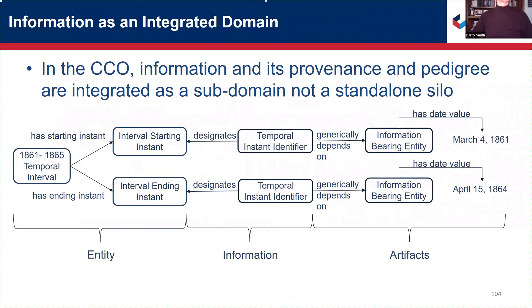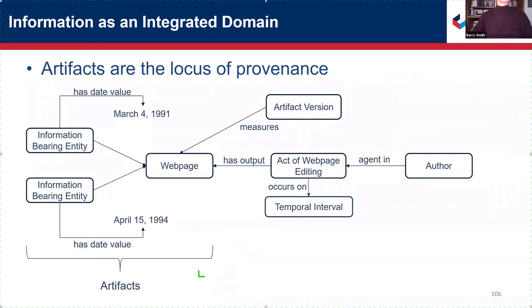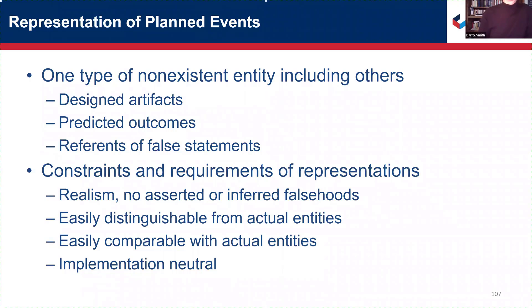We won't talk about literals, the way CCO deals with provenance, or the ways provenance is recorded, because we want to talk about non-existent entities. Rather, we want to see how we can deal with what people think they are doing when they think they are talking about non-existent entities within a BFO CCO framework. We're going to look very quickly at designed artifacts, predicted outcomes, and reference of false statements. What we want to do is stick with realism: we shouldn't be able to infer from anything we say anything that is false, and we don't want to be able to infer that some non-existing entity exists.